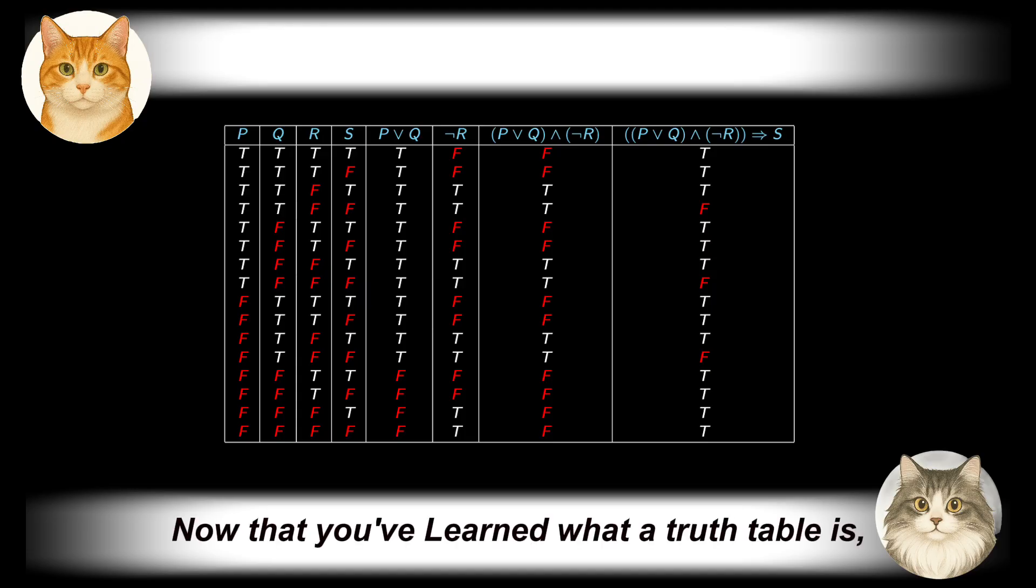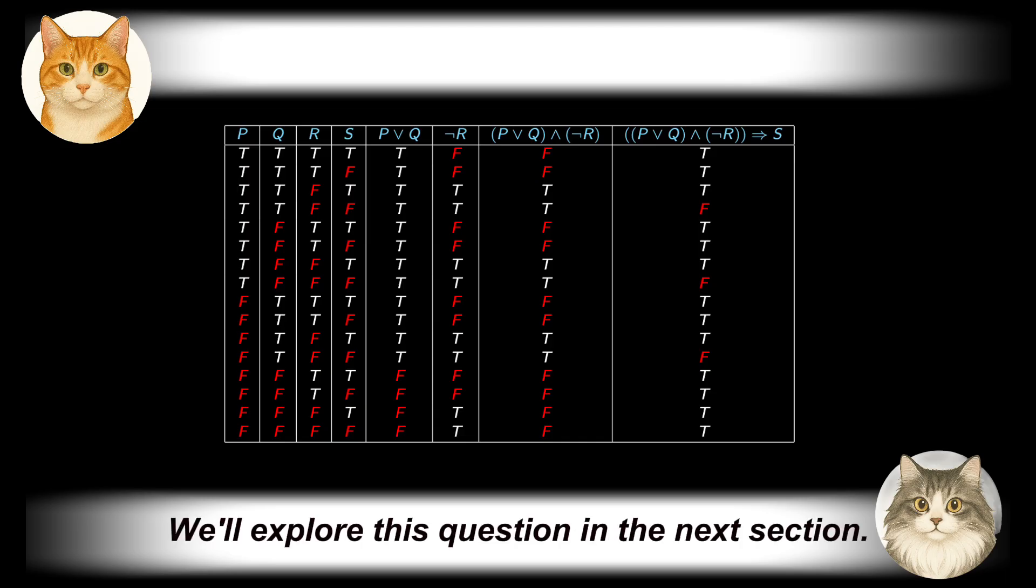Now that you've learned what a truth table is and how to use it to evaluate the truth value of a compound statement based on its atomic components, a natural question arises: are there propositions that are always true, no matter what the truth values of their atomic components are? We'll explore this question in the next section.